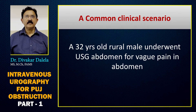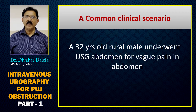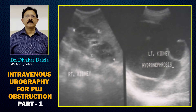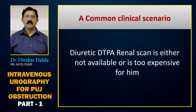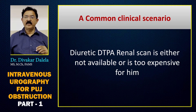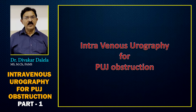A very common clinical scenario is this: a 32-year-old rural male underwent ultrasonography for flank pain and the ultrasound report shows hydronephrosis in, let's say, the left kidney. When you want to find out whether this hydronephrotic kidney is obstructed or not, you want a diuretic DTPA renal scan, which may not be available in that area, or may be too expensive or difficult for the patient.